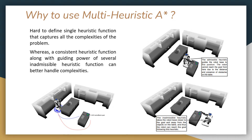Consider an example of a PR2 robot full body manipulation scenario. The PR2 robot needs to grasp an object on the table marked by end effector goal. The admissible heuristic shown in the blue line guides the search to a local minimum as the robot cannot reach the object from the left side of the table. However, an additional inadmissible heuristic shown in red guides the search along a feasible path, allowing the planner to efficiently compute a valid plan by computing the navigation distance to different points around the object to be grasped. This is why we use multi-heuristic A star.